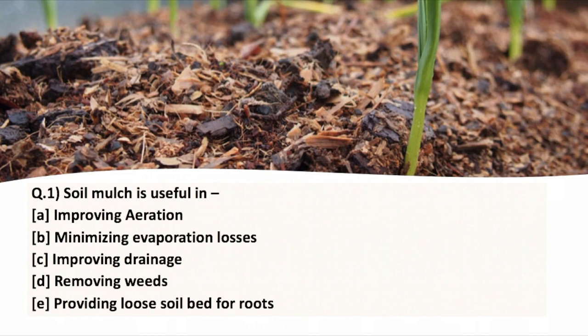The first question is: soil mulch is useful in? I have already discussed soil mulching in a previous video. Mulching is basically any material that is spread or put on the surface of the soil as a covering — it could be newspaper, compost, leaves, or dried leaves. There are various reasons why soil mulching is done. Let's look at the options and analyze whether they relate to soil mulching.